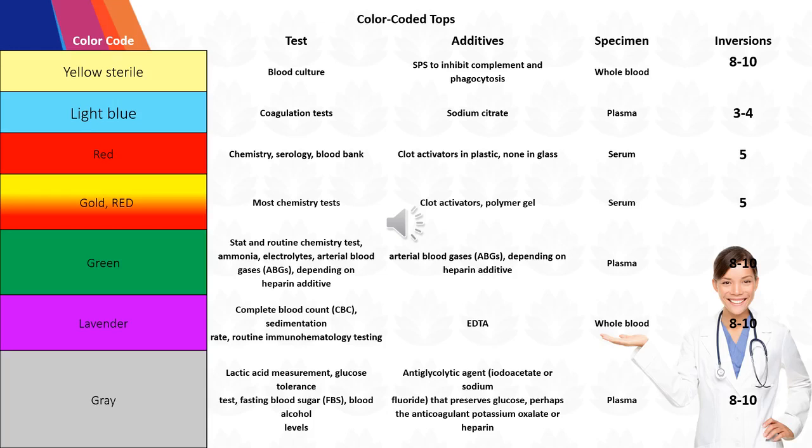Lavender — Complete blood count (CBC), sedimentation rate, routine immunohematology testing; Additive: EDTA; Specimen: Whole blood; Inversions: 8–10. Gray — Lactic acid measurement, glucose tolerance test, fasting blood sugar (FBS), blood alcohol levels; Additives: Anti-glycolytic agent (iodoacetate or sodium fluoride) that preserves glucose, and anticoagulant potassium oxalate or heparin; Specimen: Plasma; Inversions: 8–10.